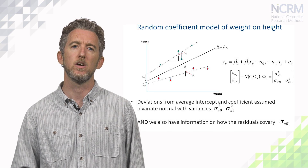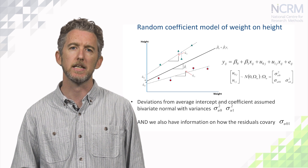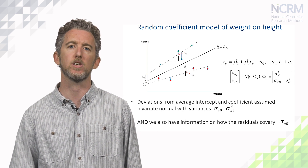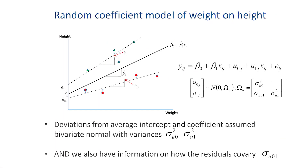Now we have two sets of group level residuals: one associated with the intercept u0j, and one associated with the coefficient u1j. These residuals are assumed bivariate normal with means 0 and variances summarised by a variance-covariance matrix. The matrix is composed of an intercept variance sigma squared u0, a variance accounting for variability in the effect of weight on height, and the covariance term between the two sets of residuals u0,1.